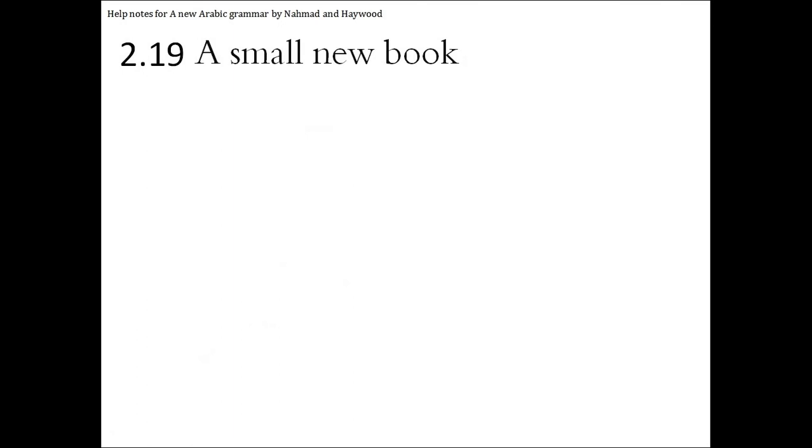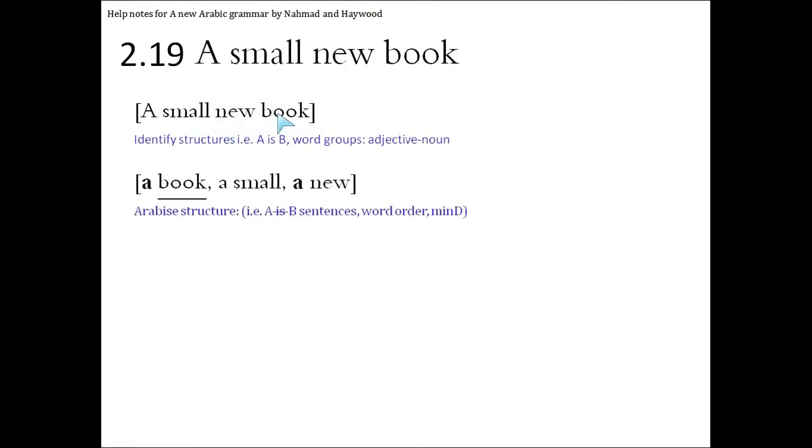A small new book, question number 19. Again we identify the structures. There is no 'as', there's no 'am', there's no 'are', there's only a single group of words. The word is 'book', which is described by 'new' and 'small'. So we put the word 'book', and when we arabize the structure, at the beginning the word order is important.